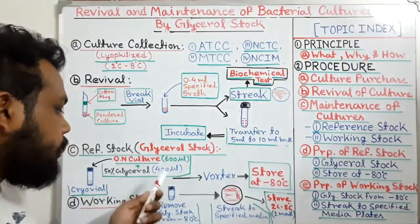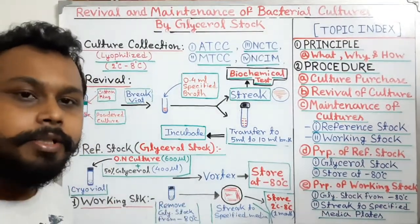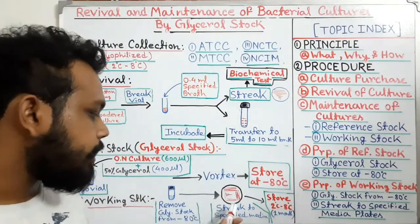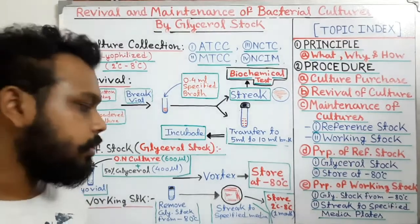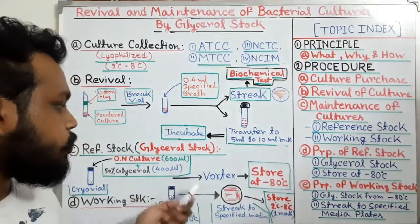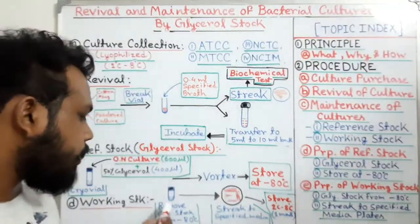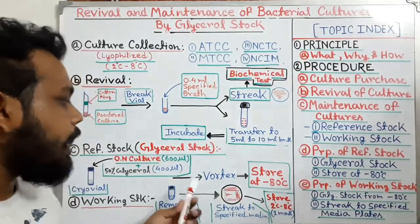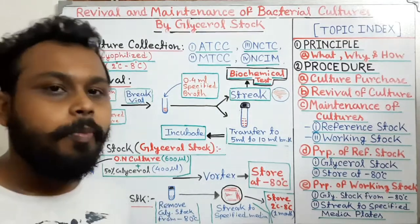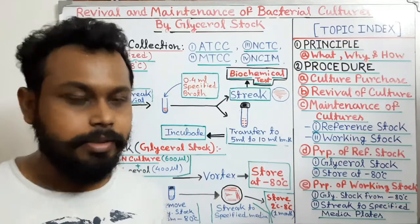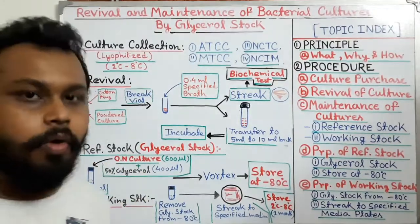To prepare the working stock, we take the cryovial from minus 80°C and streak it onto specified media where the required bacteria can grow. We store this working stock in a normal refrigerator at 2 to 8°C for up to one month and use it for daily work. This is the whole process of revival and maintenance of bacterial cultures — by glycerol stock preparation as reference stock and from it preparing the working stock. Thank you for watching.